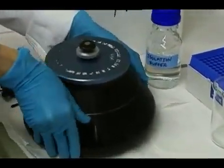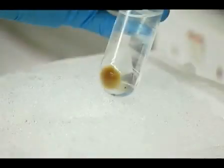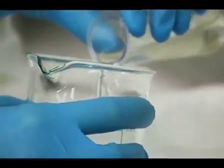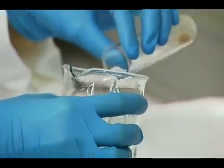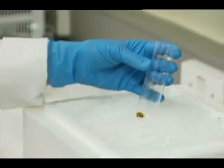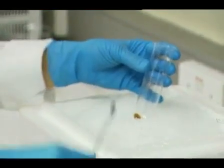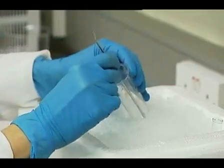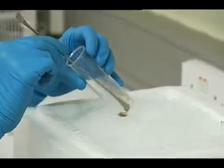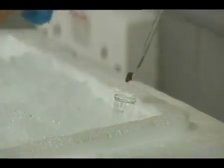The resulting brown pellet contains washed intact mitochondria. Resuspend the pellet in a very small volume of resuspending buffer. The lower the volume you use the more stable the preparation of mitochondria will be.